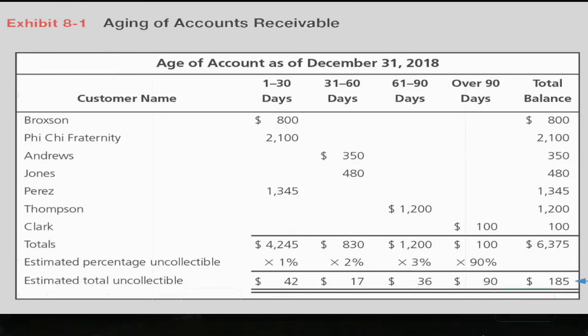And then there's $1,345. So the total of those amounts owed by customers that is between one day and 30 days is $4,245. A different group, if you look at the second column, 31 to 60 days, there's $830 owed. And then 61 to 90 days, there's $1,200. And then over 90 days, there's $100 owed by customers.